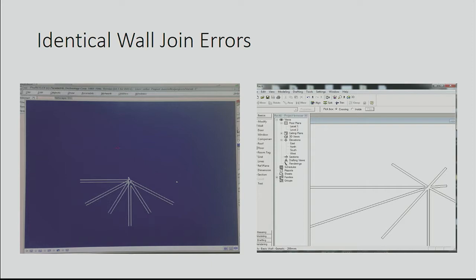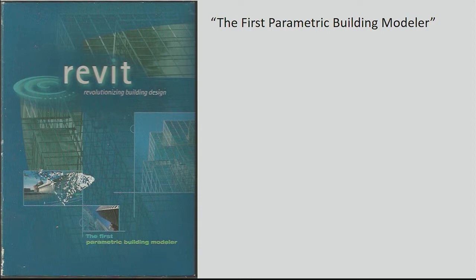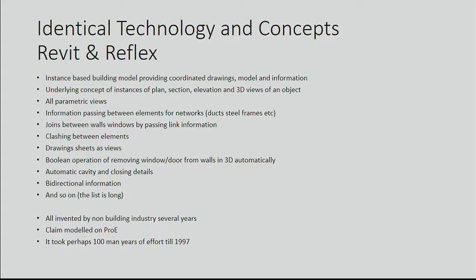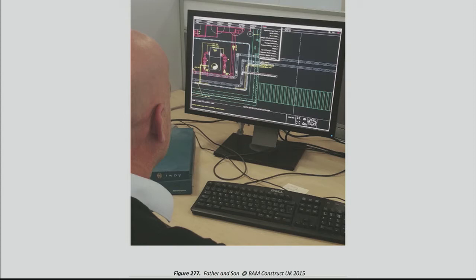These are errors in wall closures — very deep wall closures, very detailed things going on — and the fact that they're trying to do exactly the same things in exactly the same place and having exactly the same bugs says something. Wall joins there showing not identical bugs, but I wasn't able to get exactly the same angles. They're calling Revit — and I do have version one of Revit running on my machine at home — the first parametric builder. So obviously we have seen previous parametric builders; in fact, mine wasn't the first parametric building modeler either. There were some before me. All of those concepts are identical between Reflex and Revit. There was perhaps a hundred man-years of effort until 1997, from myself, from my team, from people working on libraries, from customers, in bringing that whole system together. In my opinion, I think it's unlikely that they managed to invent it in a couple of years — but it's possible, and that's what they're claiming.